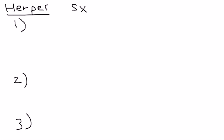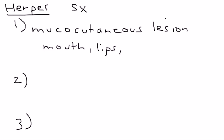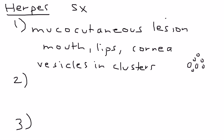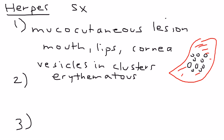The first one is a mucocutaneous lesion. These lesions commonly occur on the mouth, lips, conjunctiva, or cornea. You have these characteristic vesicles that are in clusters of different sizes, and they're sitting on an erythematous red base. I encourage you to look up pictures of herpes mucocutaneous lesions to get an idea of what this looks like.